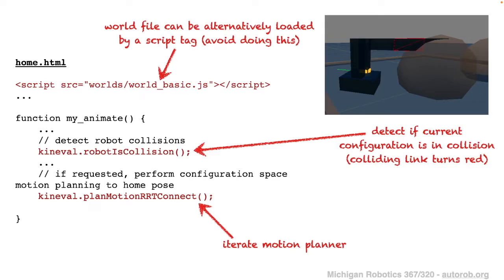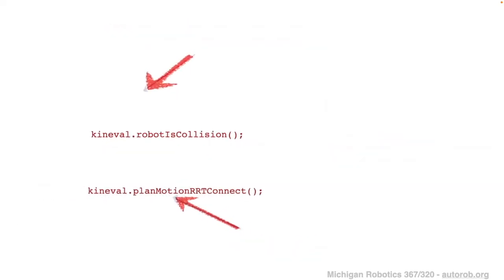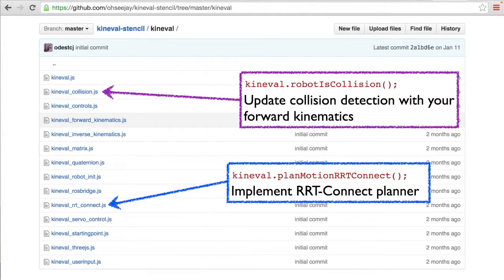We talked about the plan_motion_rrt_connect function in the past two lab sections, so I'd recommend going back and watching those for tips and implementation details. Essentially, this function iterates our RRT Connect motion planner algorithm one step at a time. The robot_is_collision function is implemented within the knievel_collision JavaScript file, whereas the RRT Connect planning function is implemented within the knievel_rrt_connect JavaScript file. For this lecture we're going to be focusing on collision detection in particular.